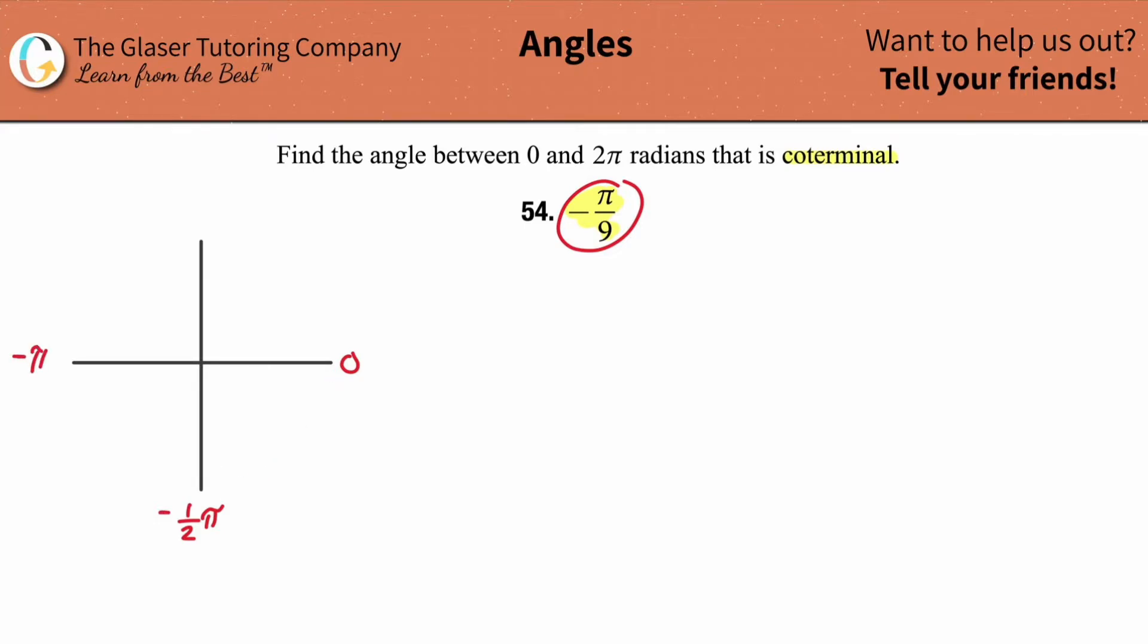Then this becomes negative π radians. These are all in terms of radians. Then this is negative 3/2 π, and then this would have been the negative 2π if we had to keep going. So what I want to do here first is just get a feeling for where this negative π/9 falls.